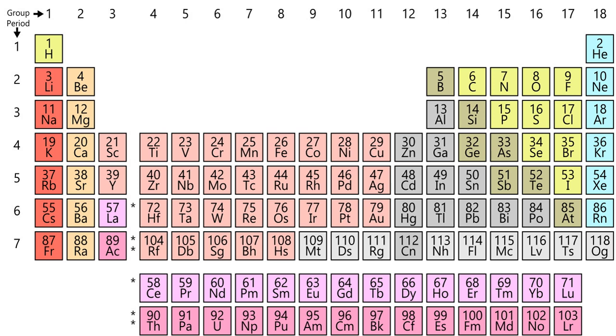Of the 94 naturally occurring elements, those with atomic numbers 1 through 82 each have at least one stable isotope except for technetium, element 43, and promethium, element 61, which have no stable isotopes.